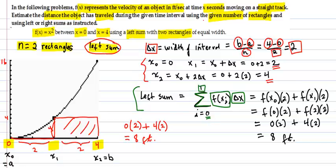Because you'll take the velocities at x of i and multiply them by the delta x and add those up. So when i is zero, this is f of x sub zero times two.